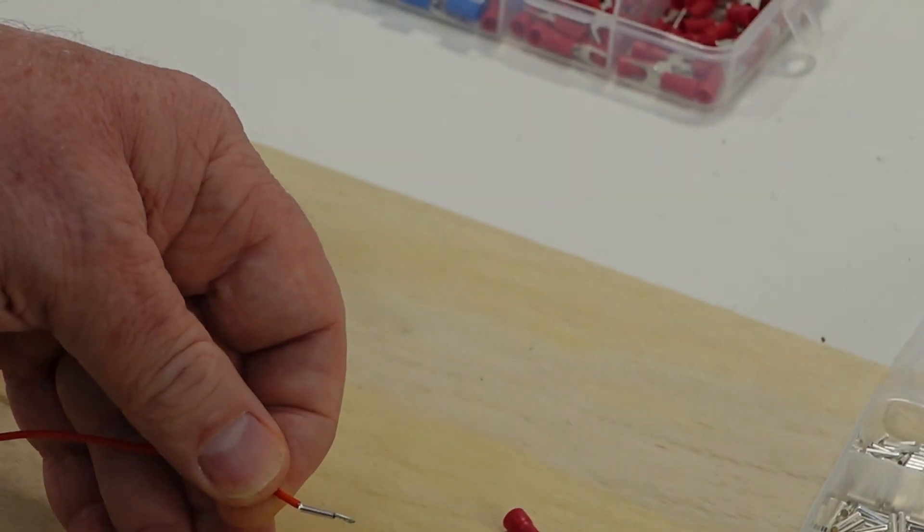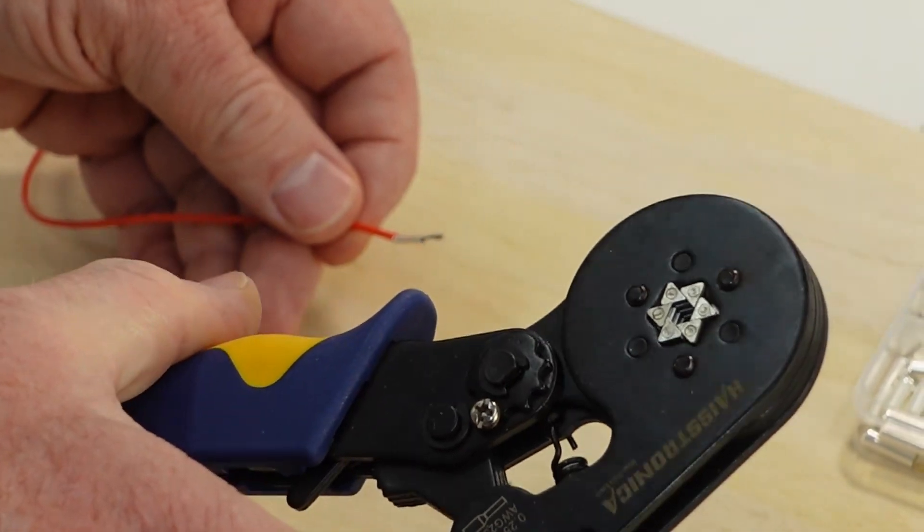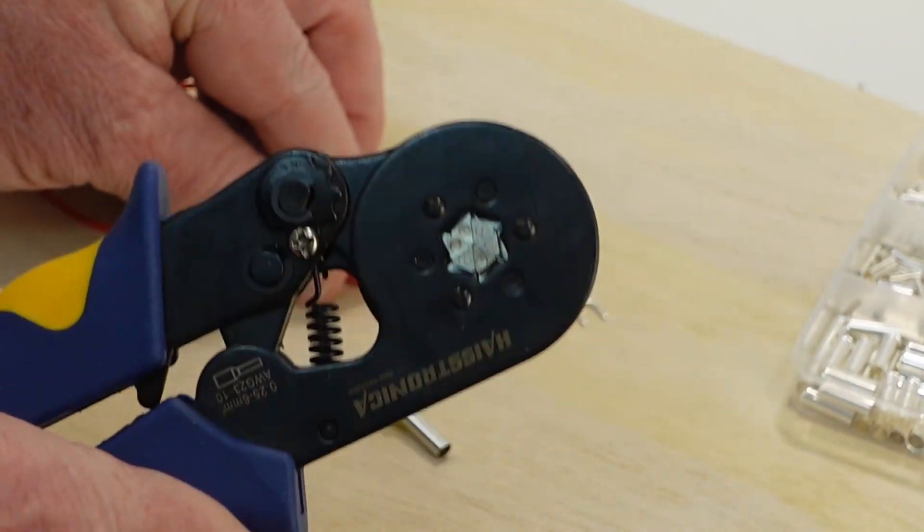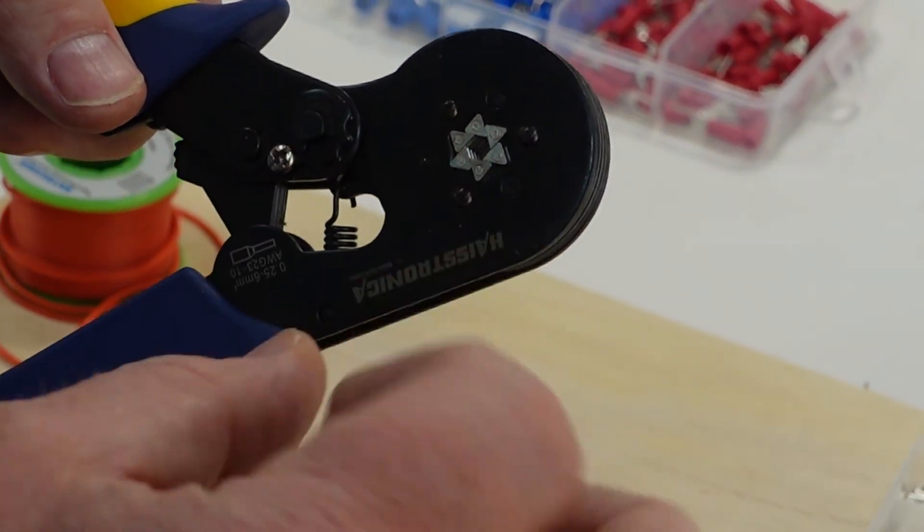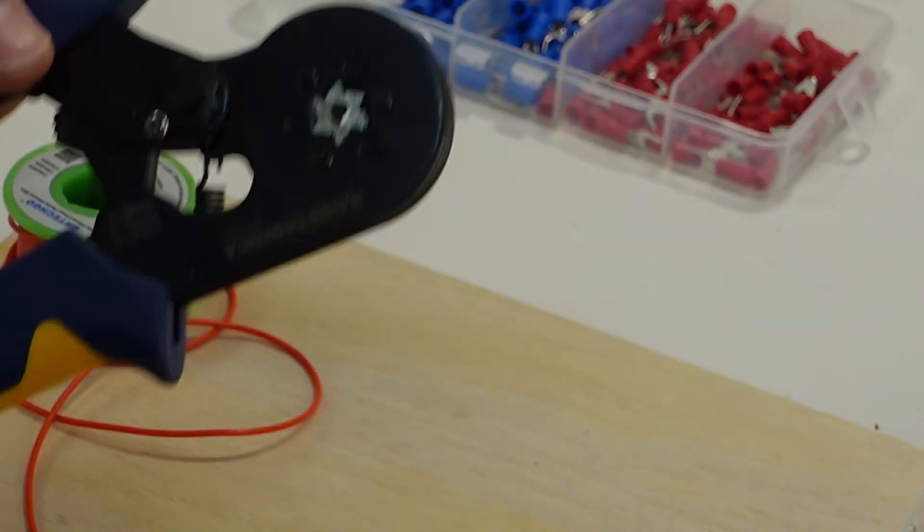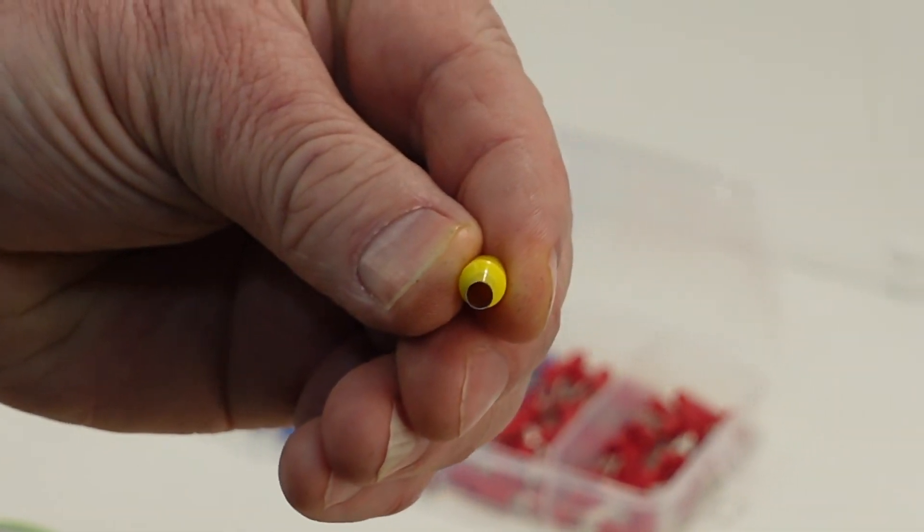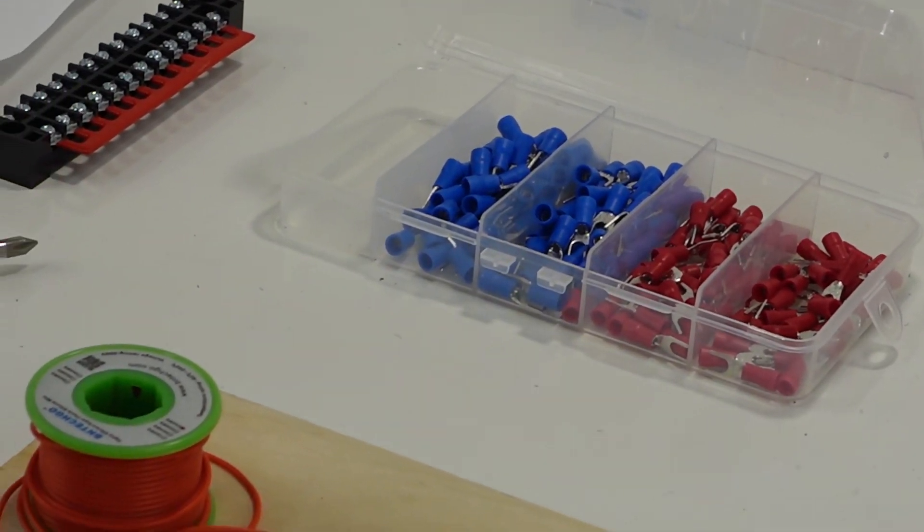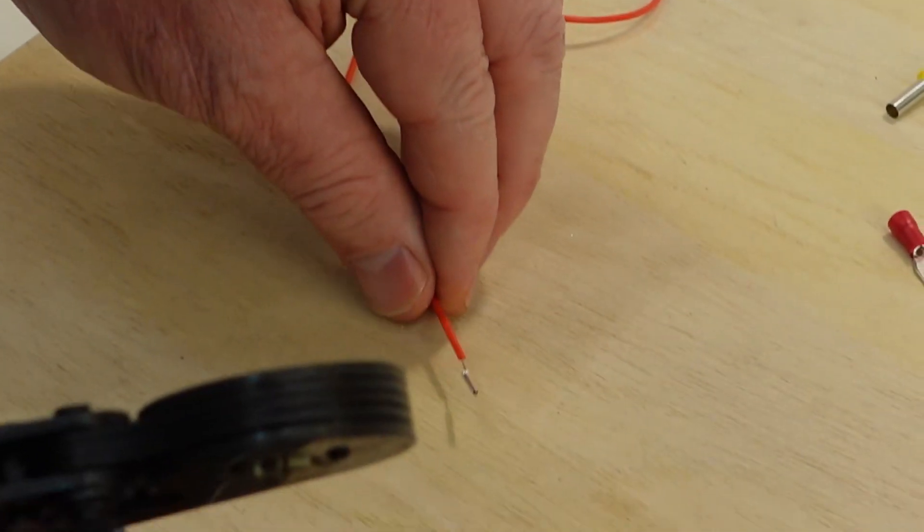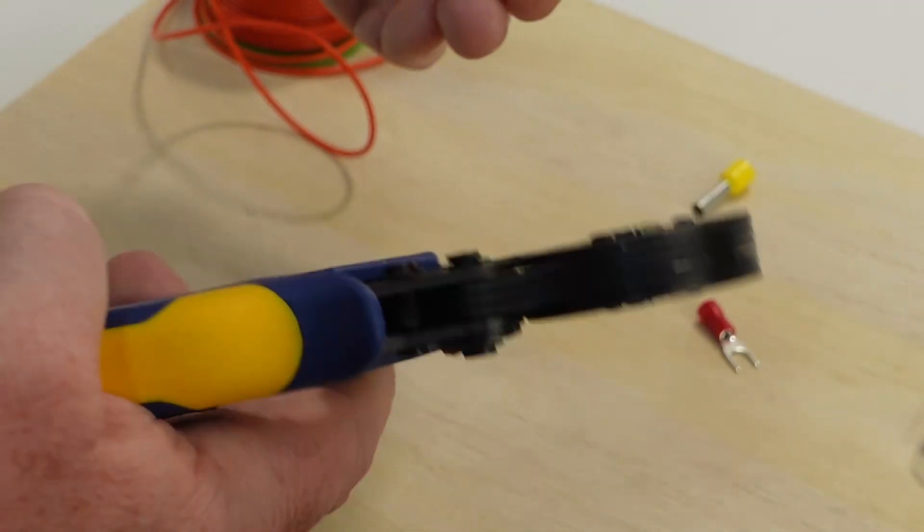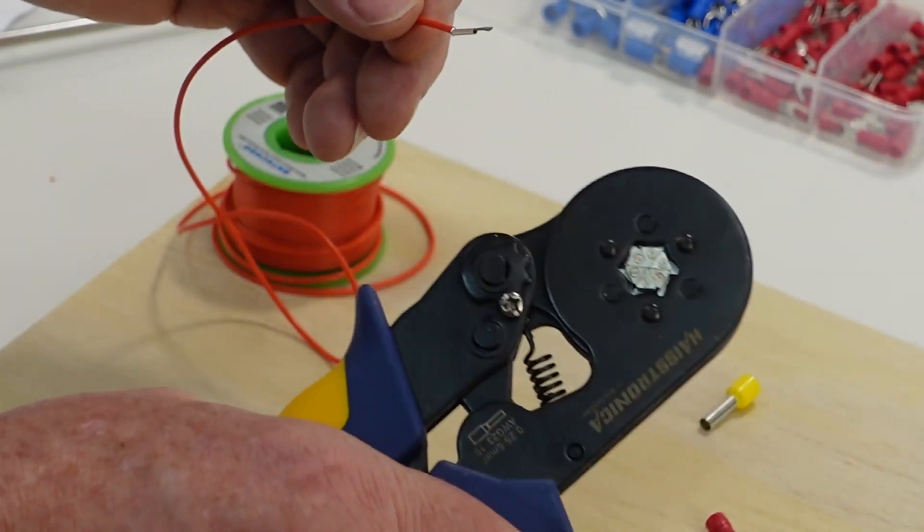And the next thing we're going to do is crimp this ferrule onto the end of the wire. So these are ferrule crimpers right here. You can see it's kind of an ingenious design, really, these ferrule crimpers here. It basically crimps a cylinder, if you will. The ferrules are kind of cylindrical, if you can see here. So when you crimp these on, you want to make sure you have a tool that puts equal pressure on all sides, the entire surface around the cylinder. And that's what these do really well.